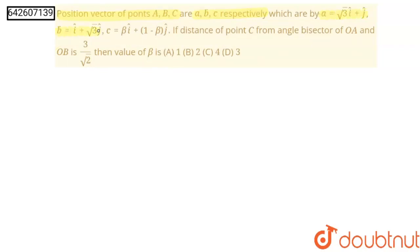If distance of point C from angle bisector of OA and OB is 3 upon root 2, then the value of β is, and these are our four options.